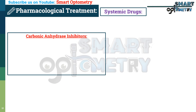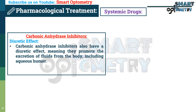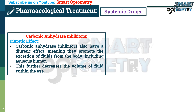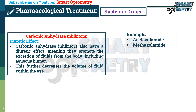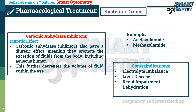Systemic carbonic anhydrase inhibitors lower IOP by a diuretic effect. They promote the excretion of fluid from the body, including aqueous humor, which further decreases the volume of fluid within the eye, reducing IOP. These are examples of systemic carbonic anhydrase inhibitors. Contraindications include electrolyte imbalance, liver disease, renal impairment, dehydration, pregnancy, and breastfeeding.